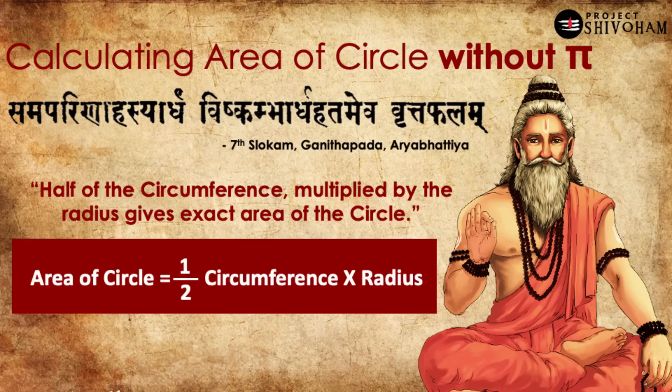This is what Aryabhata gave as a formula: 'Half of the circumference multiplied by the radius gives the exact area of the circle.' This is Aryabhata's formula to calculate the area of a circle without using pi — avoiding the uncertainty introduced by pi's transcendental nature. In ancient Bharat, all these formulas were given in literary format, like picking vegetables from a field rather than from a store. In our current education system, we learn 'area of a circle equals πr²' — that's what we are taught from childhood.